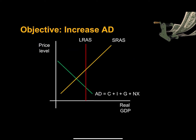Here we have an aggregate supply, aggregate demand model showing the economy in recession. Real GDP is below potential, suggesting the unemployment rate is above the natural rate.